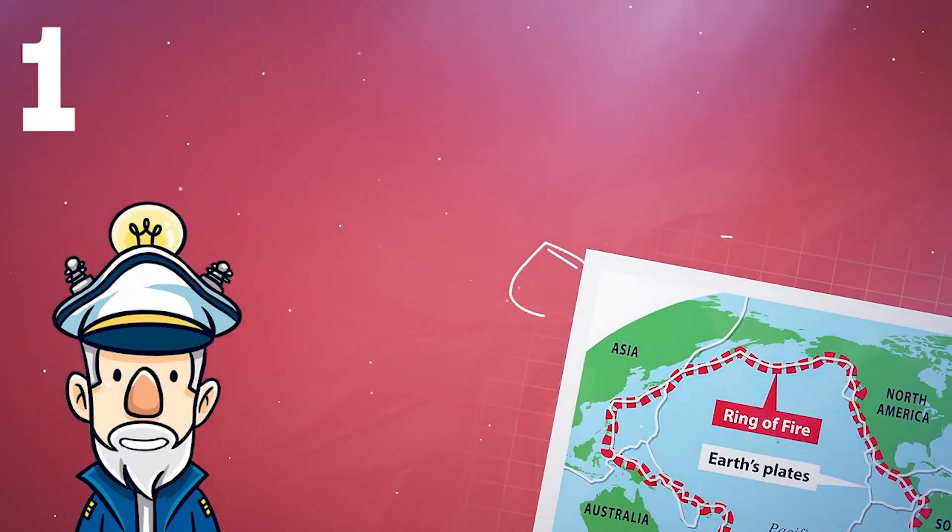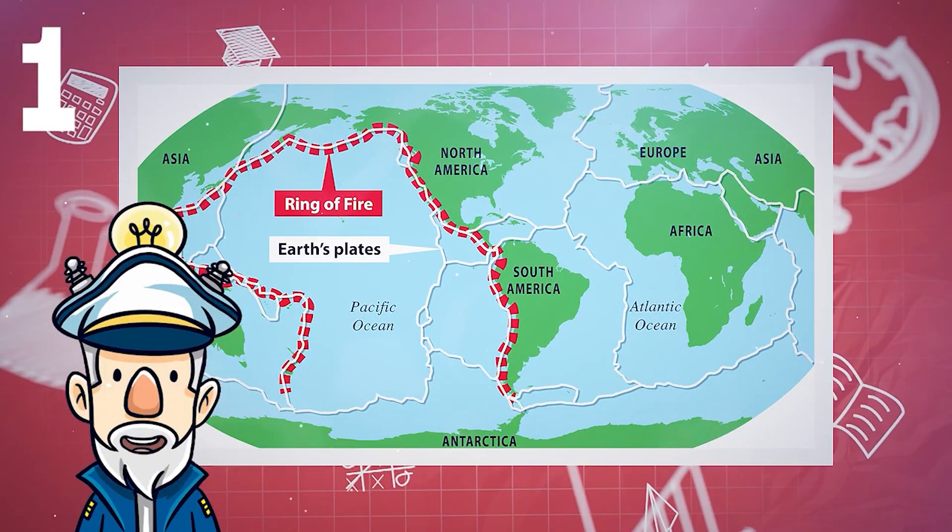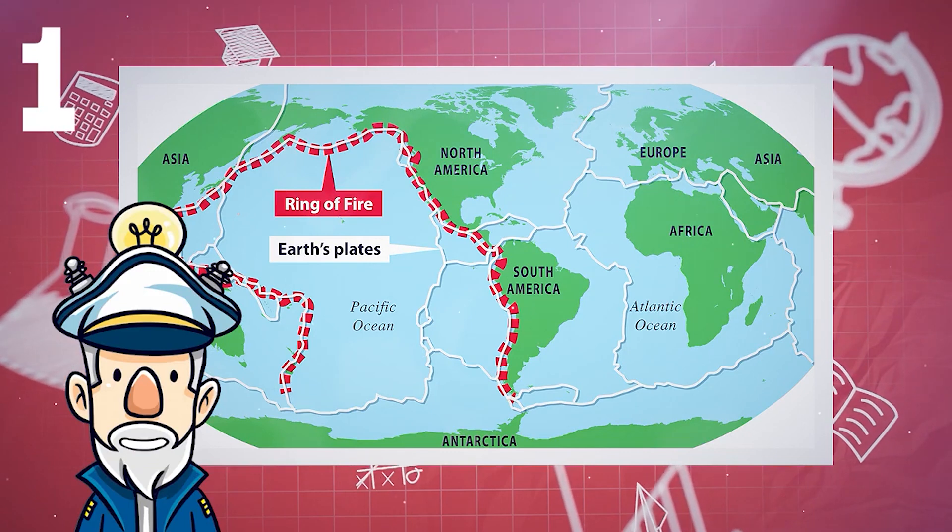Number 1: There are more than 500 active volcanoes in the world. More than half of these volcanoes are part of the Ring of Fire, a region that encircles the Pacific Ocean.